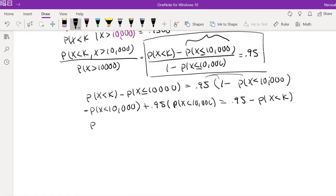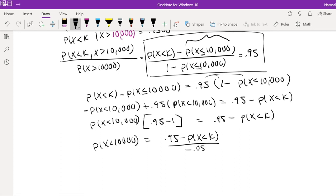Okay, so I can actually factor out X is less than $10,000. So I get 0.95 minus 1 is equal to 0.95 minus probability that X is less than K. Alright, so this probability that X is less than $10,000 is equal to 0.95 minus probability that X is less than K divided by negative 0.05.